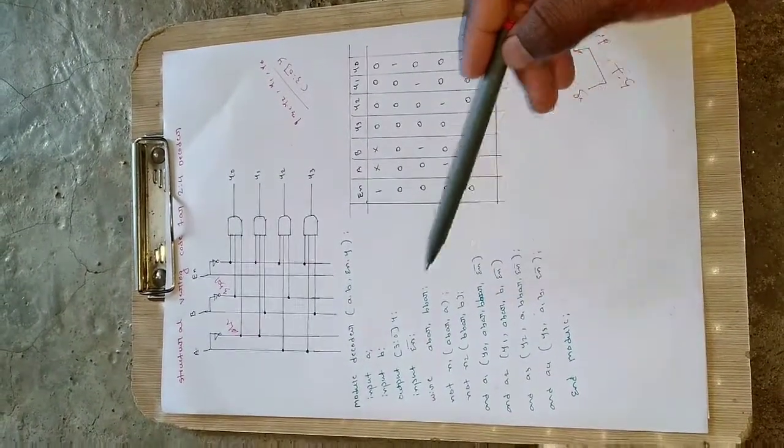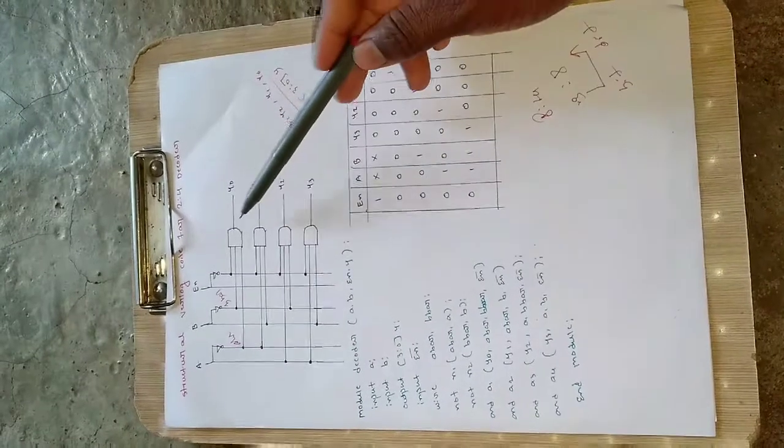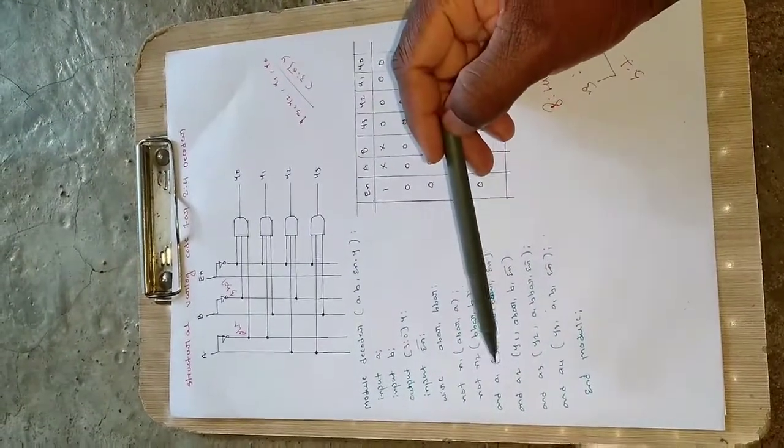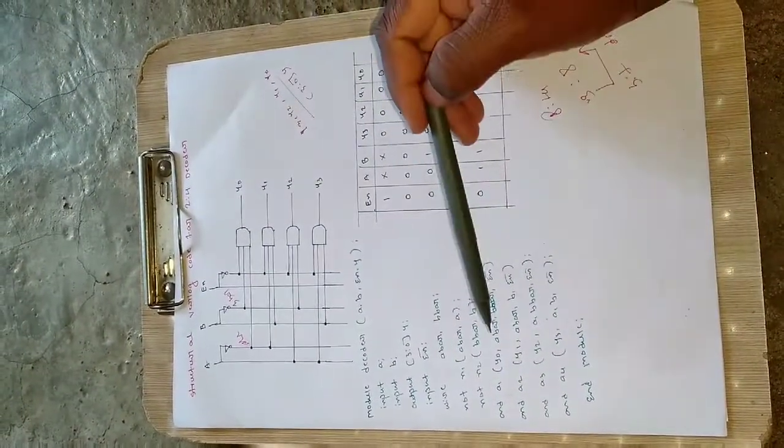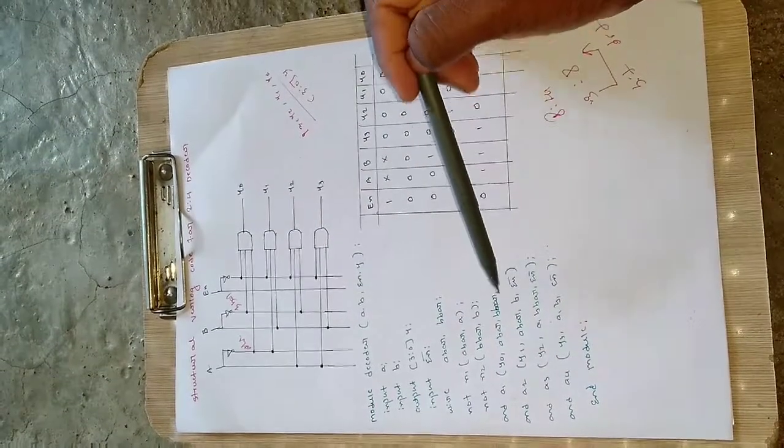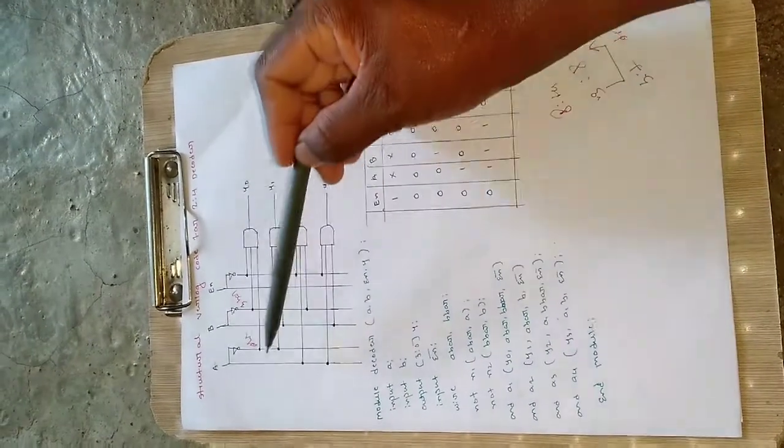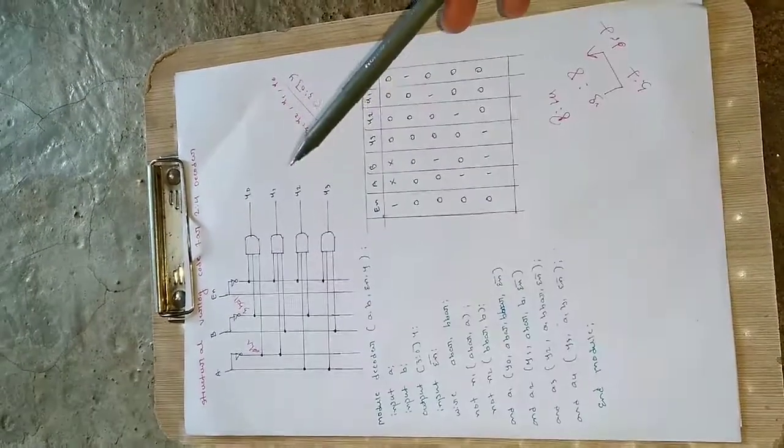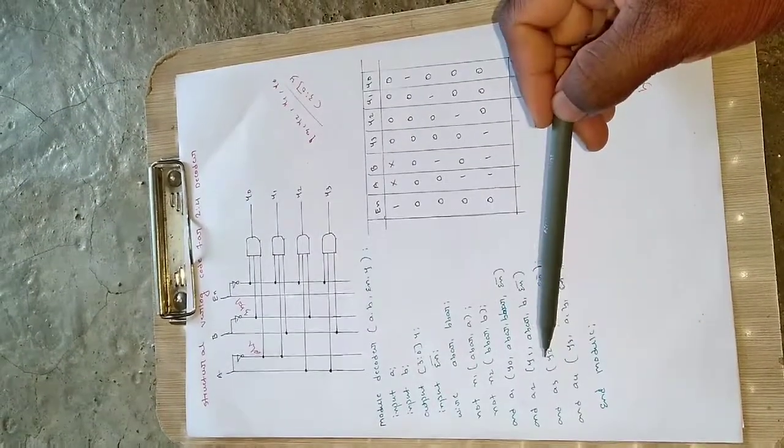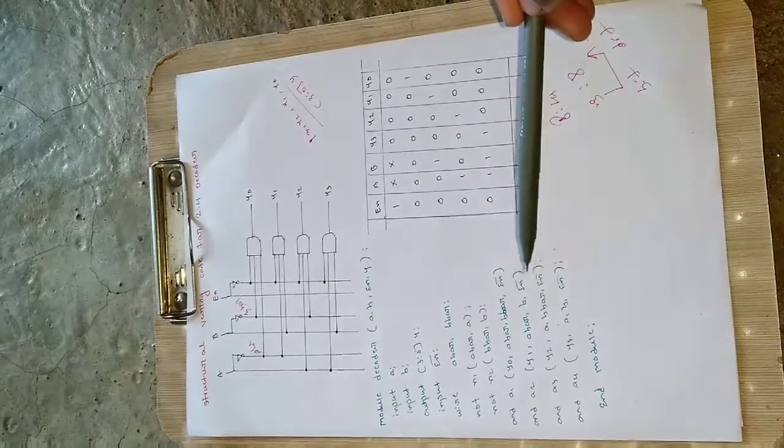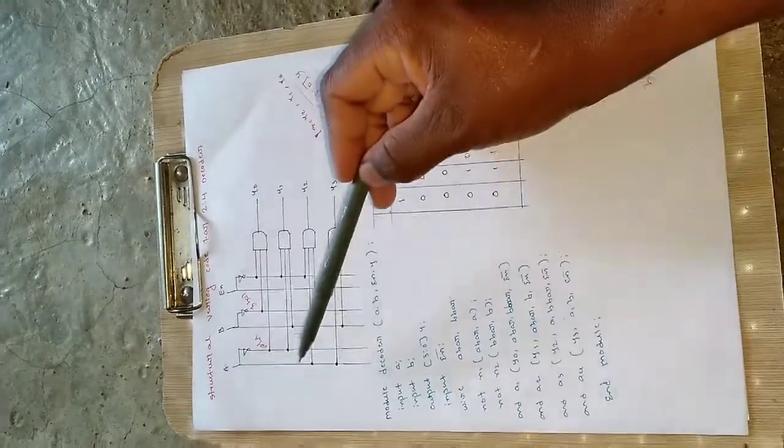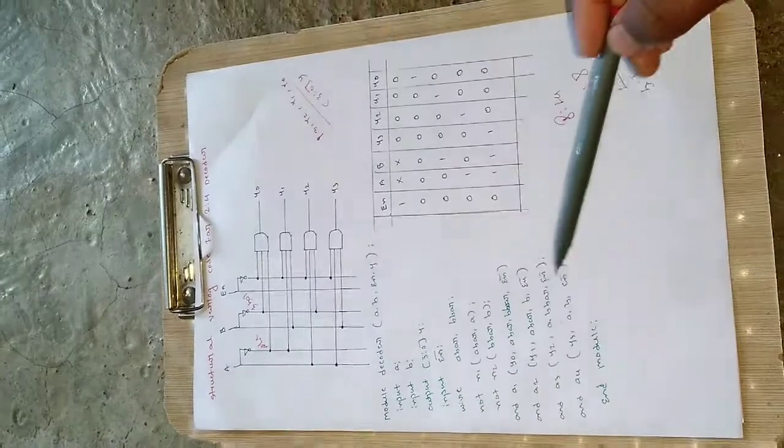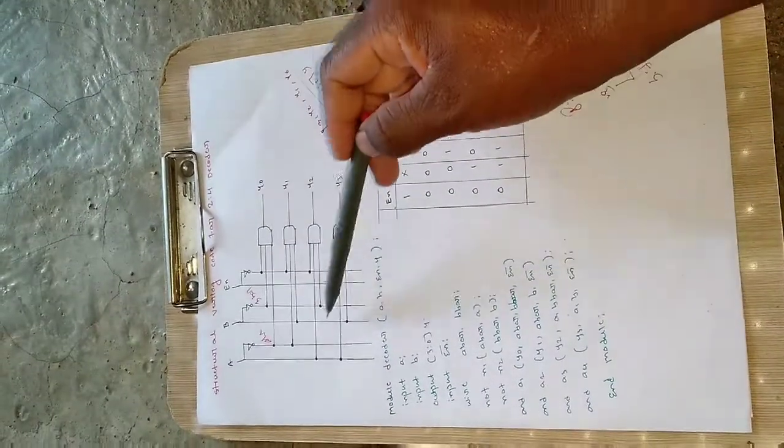For the first AND gate, I have taken it as a1. Y0 is the output and A bar, B bar, and enable bar are the inputs. For the second AND gate a2, Y1 is the output and A bar, B, and enable bar are the inputs. Whatever is connected here, I am writing in terms of the equation.